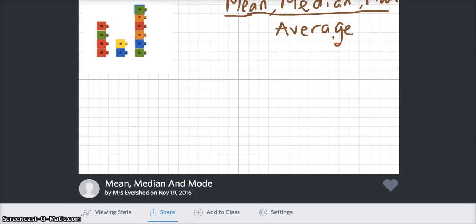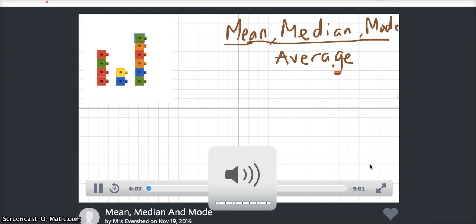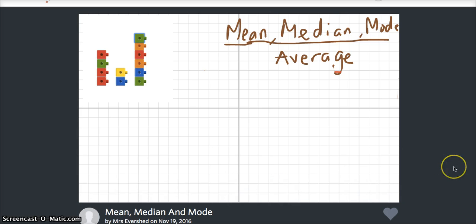We've started finding averages using the mean average. So the example we did in class, we built five towers. Here the example is three towers. And if we wanted to find the average height of these towers, one way would be to calculate the mean average.